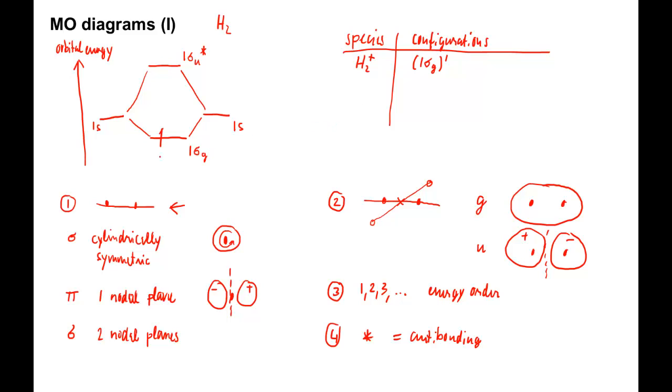Two electrons give H2. The electron configuration is now 1 sigma G squared. Since both electrons are in the bonding MO, the molecule is stable.